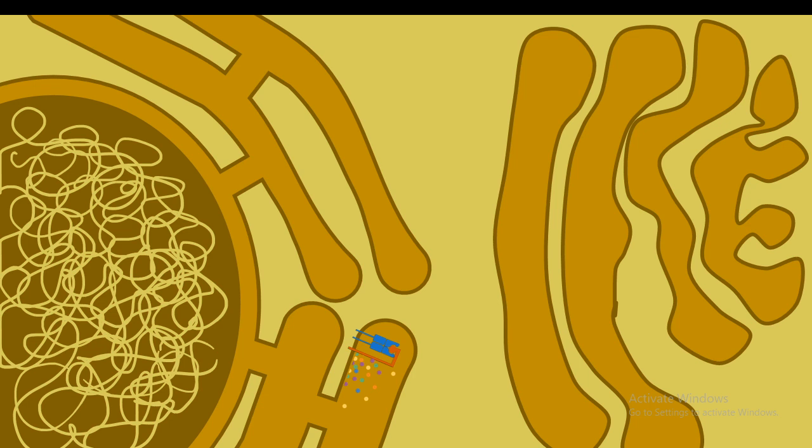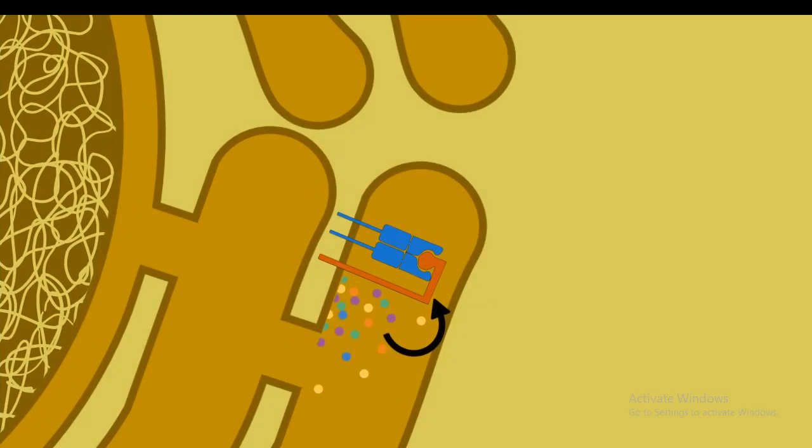This invariant chain also helps the class 2 MHC molecule to be transported from ER to the Golgi body and follow the cell's secretory pathway. From the Golgi body it would travel through the Golgi network and ultimately move towards the endosomal vesicle.